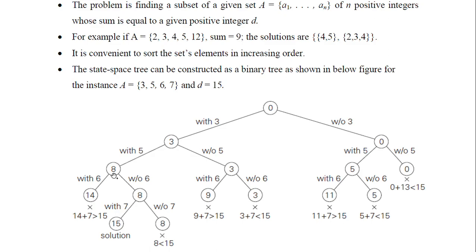With 3+5=8, adding 6 gives 14. Then 14+7 is greater than 15, so this path will not lead to a solution. I try with 3 and 5 and without 6. Without 6: 3+5+7=15 — we get the solution. Without 7, this will not lead to a solution. So this is one valid solution.